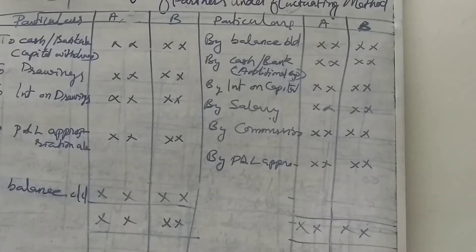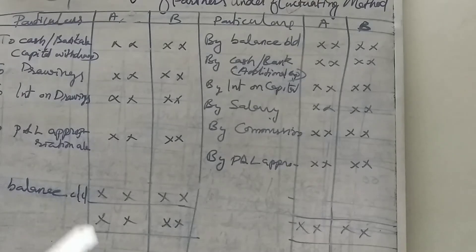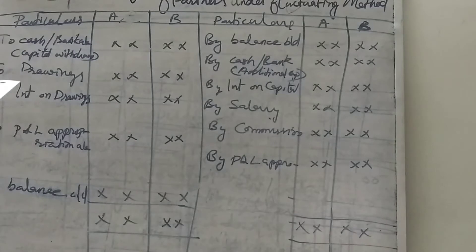Under fluctuating method, all the transactions are entered in the same capital account. There is no separate current account. So we can see on the board all items. First one: capital withdrawn on the debit side, then drawings on the debit side, then interest on drawings on the debit side. That's all the debit side items.